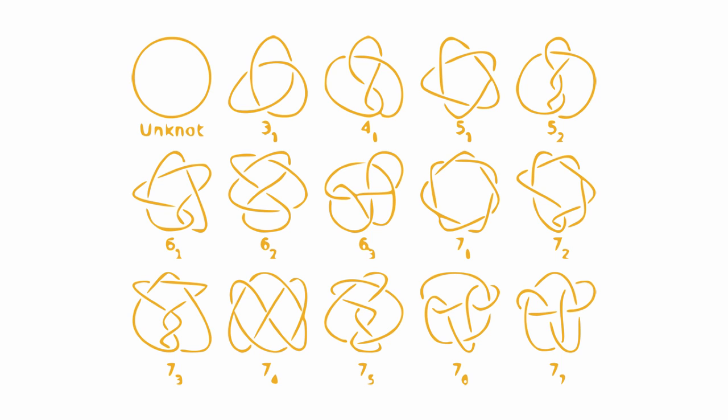Let's talk about labeling. The first number is going to be the crossing number, and the second number defines a certain knot within that crossing number. Some crossing numbers have multiple knots — five, for example, has two knots within its set.